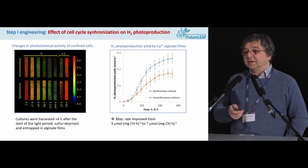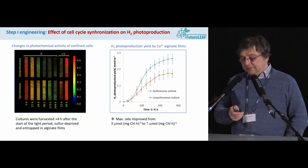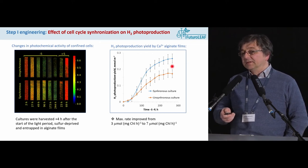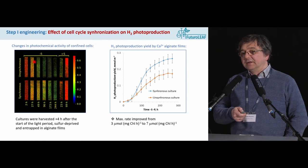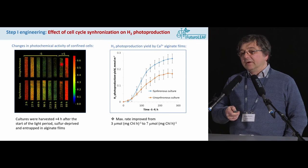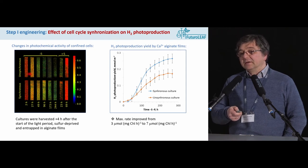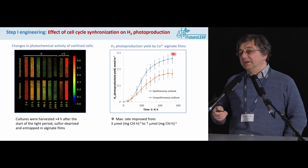The results show that introducing cells with the highest photosynthetic activity into the matrix significantly improved both the specific rate of hydrogen production and the final yield. You can see the declining photochemical activity during sulfur deprivation in unsynchronized cells, then recovery on sulfur addition. Synchronized cells perform much better — they do not lose photochemical activity as much as in traditional cultures, and they recover the photosynthetic apparatus much faster, resulting in higher hydrogen yield.